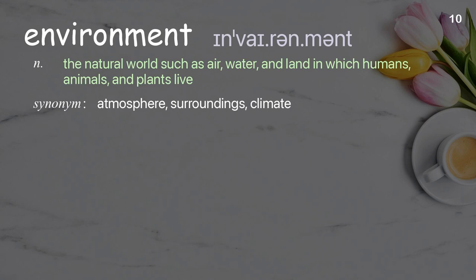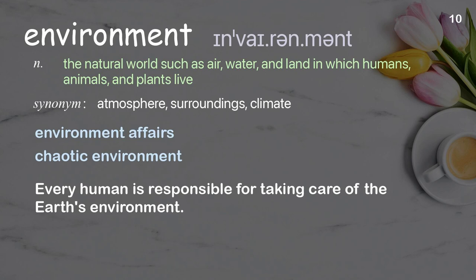Environment: The natural world such as air, water, and land in which humans, animals, and plants live. Examples: environment. Every human is responsible for taking care of the Earth's environment.